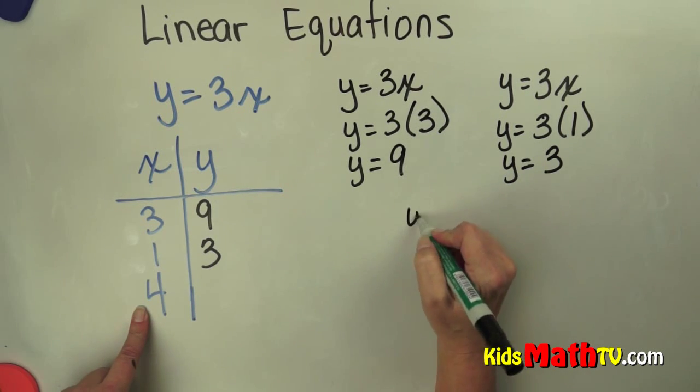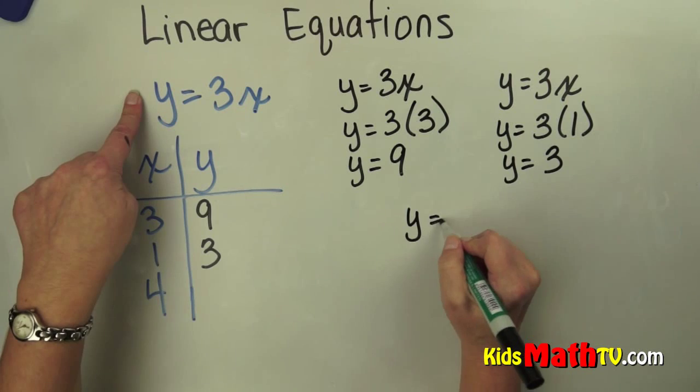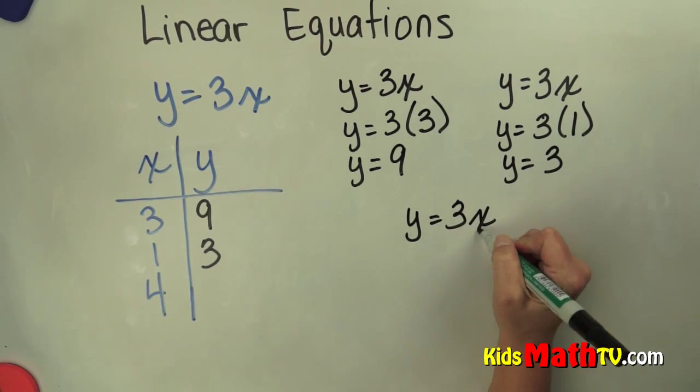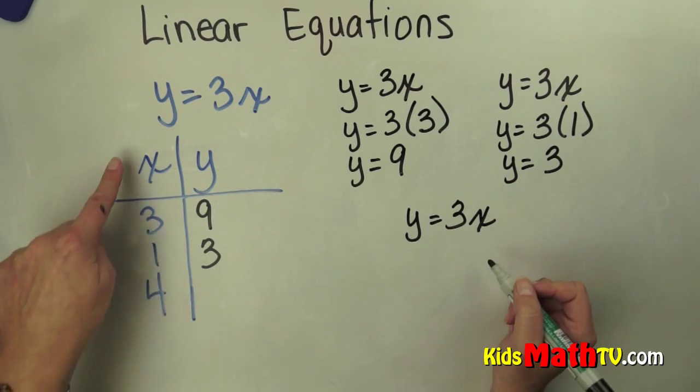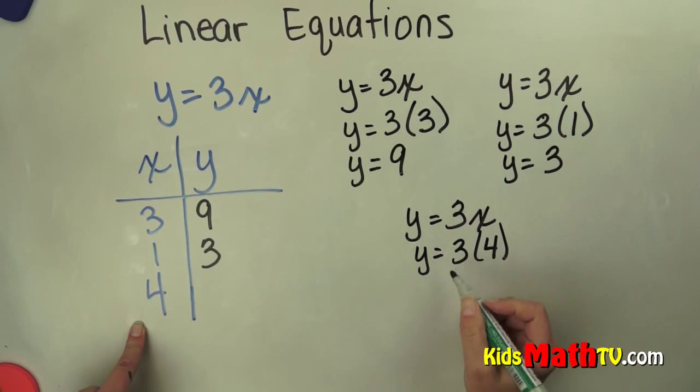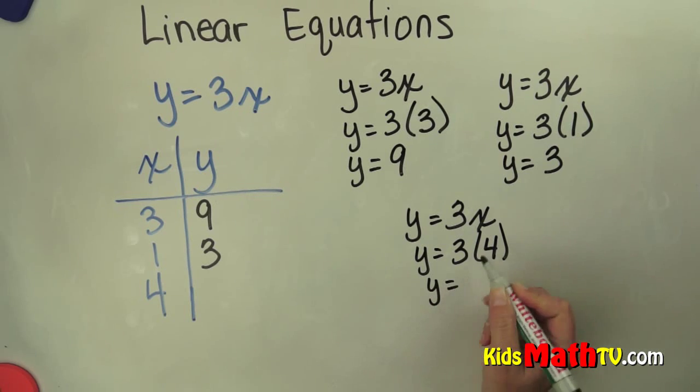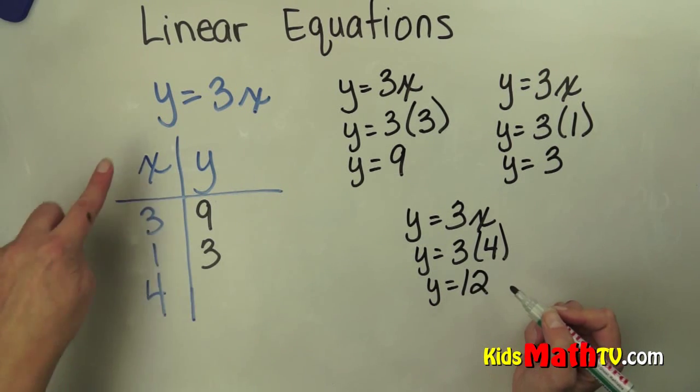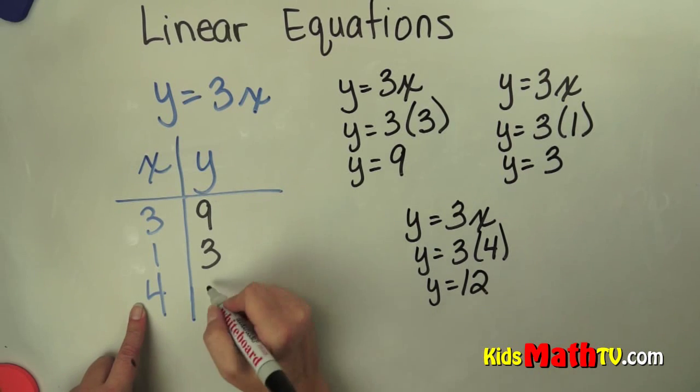We'll do one more. Again, start with the equation y equals 3 times x. Substitute 4 for x. y equals 3 times 4. And then multiply. 3 times 4 is 12. So when x is 4, y is 12.